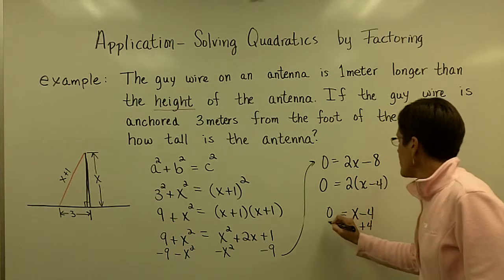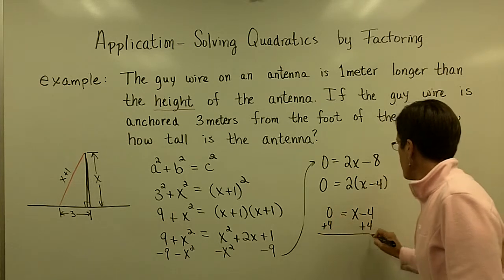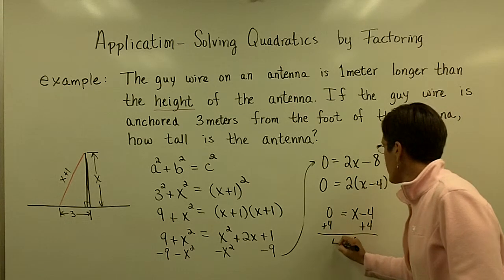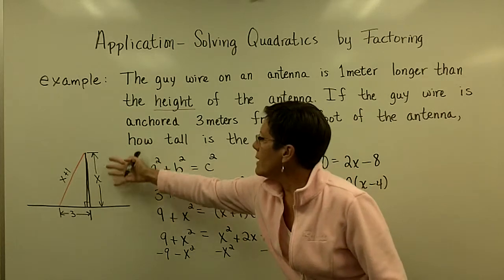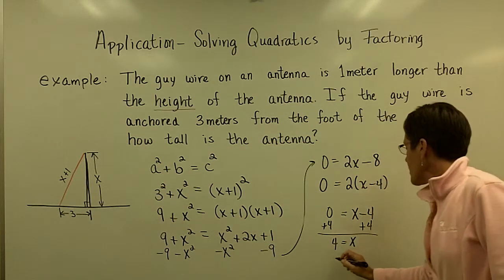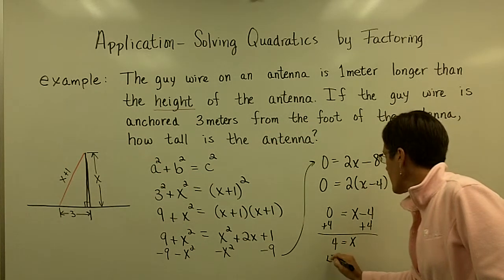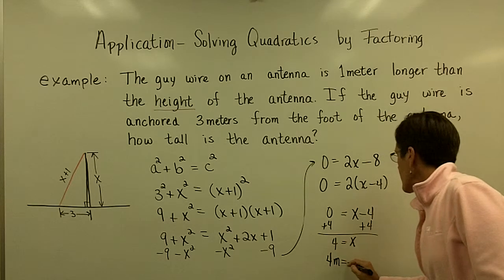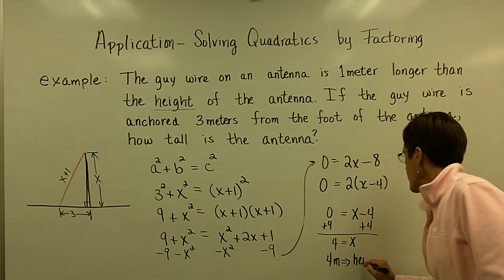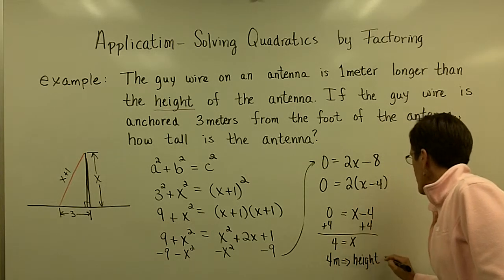And when I add four to both sides, I find out that the antenna, which I believe is X. So the antenna is four meters. So I should say here that four meters is the height of the antenna.